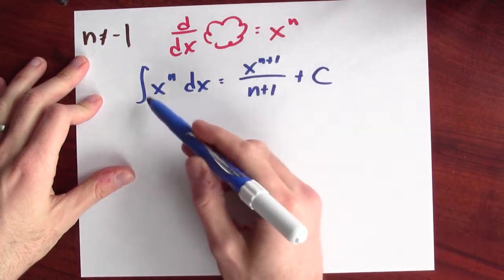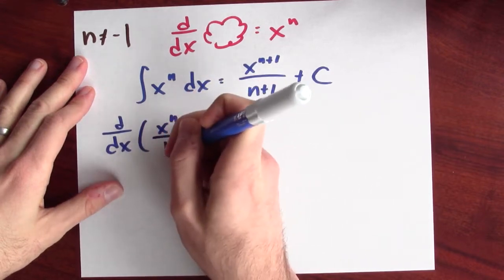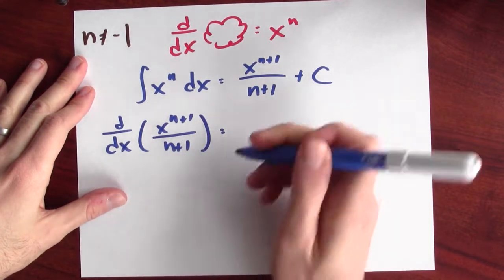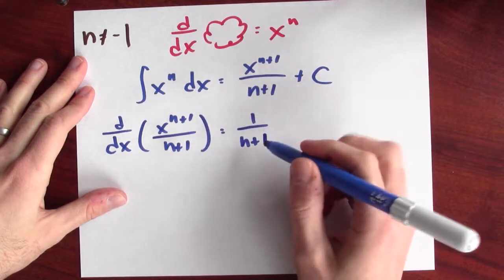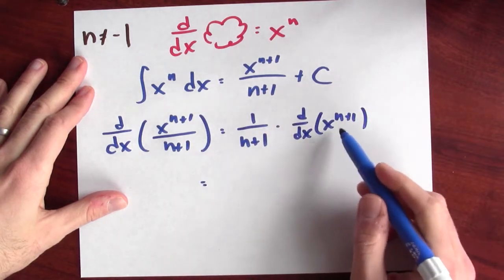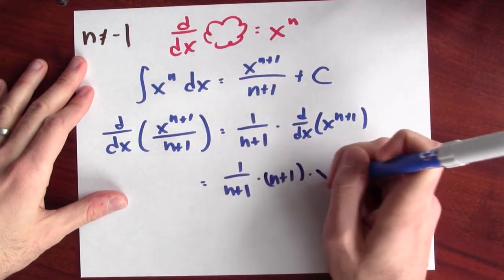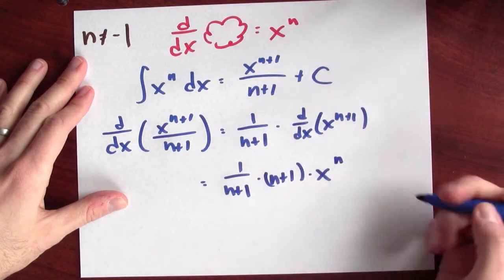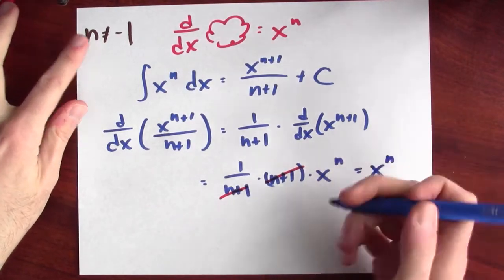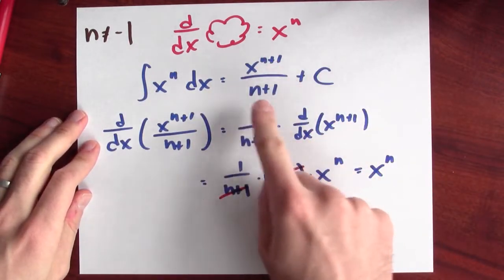How do I know that this is the anti-derivative of x to the n? Well, all I've got to do is differentiate x to the n plus 1 over n plus 1, using the power rule and the constant multiple rule. The constant multiple just comes out: 1 over n plus 1 times the derivative of x to the n plus 1. The power rule gives n plus 1 times x to the n plus 1 minus 1, which is x to the n. The n plus 1 factors cancel, leaving x to the n. So the anti-derivative of x to the n is x to the n plus 1 over n plus 1.